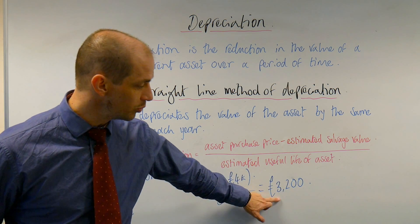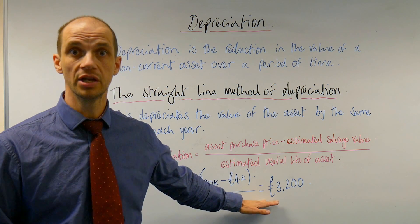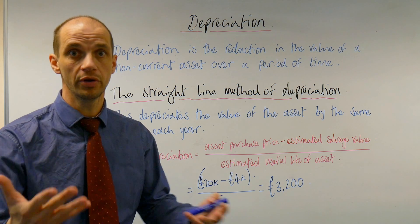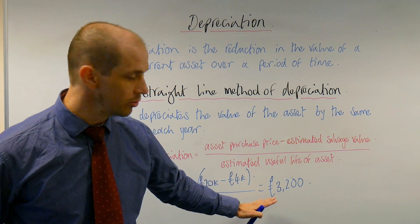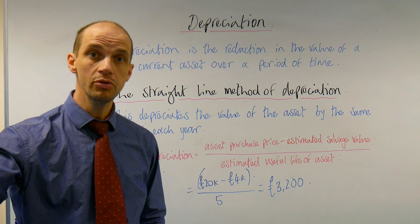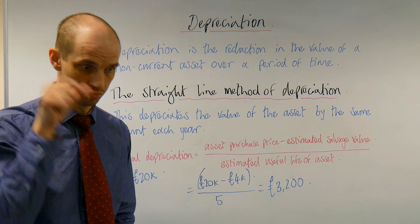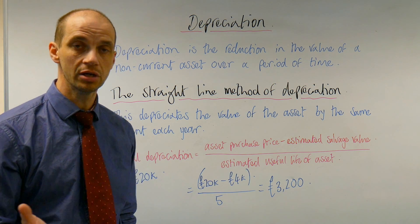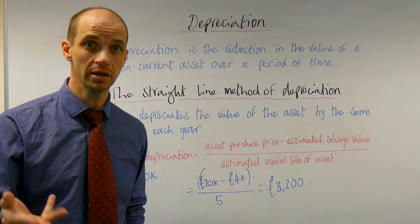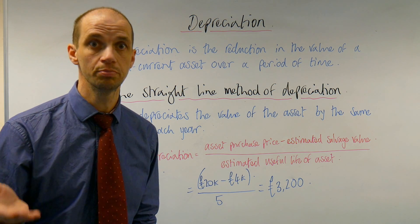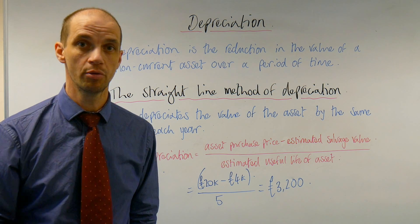Now, remember what we said in our previous lesson — that this £3,200 will then be deducted as an expense from your statement of financial income, or your profit and loss account, or income statement. So that will be deducted from there. Meanwhile, the value of your actual vehicle after year one, instead of being £20,000 as it was today having just bought that vehicle, in a year's time the value of that non-current asset would actually be £16,800 on your statement of financial position. Thus, we can see where this money is going — it's being deducted from that income statement.